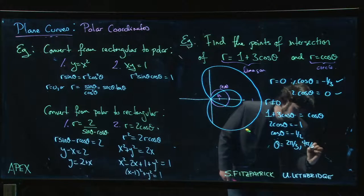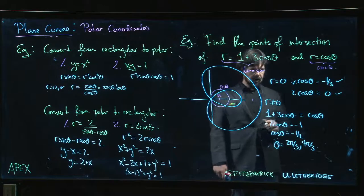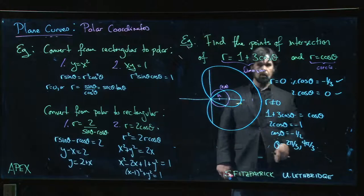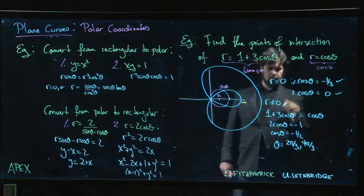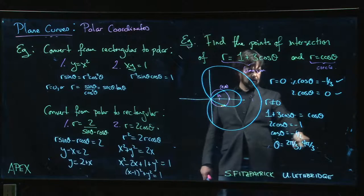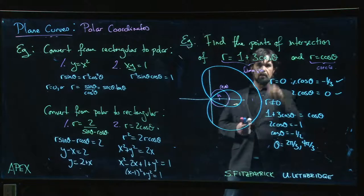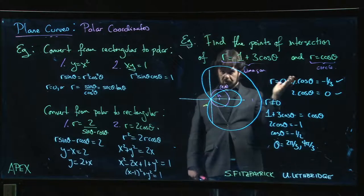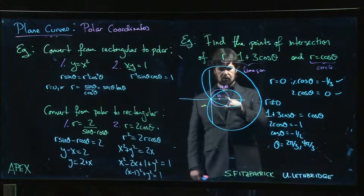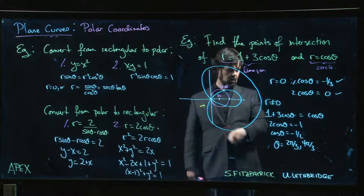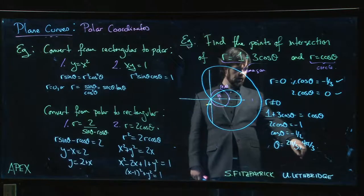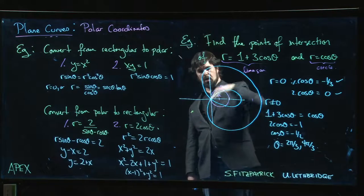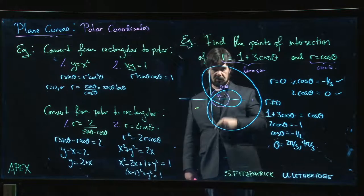In this case, cos θ will be -1/2 for both. If we put that -1/2 in, we're getting 1 - 3/2, which also gives -1/2, so it works out. Those points of intersection correspond to θ = 2π/3 or 4π/3, which are actually here and here. But r is negative for both, so we get those points of intersection there.